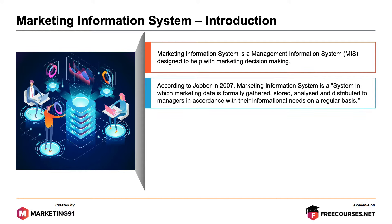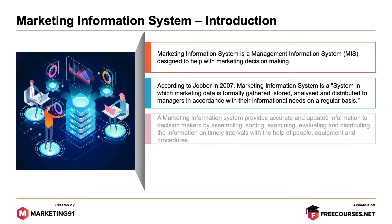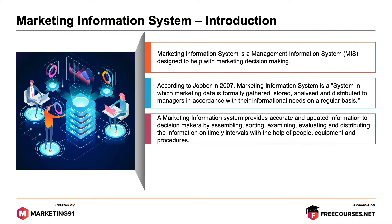According to Jobber in 2007, marketing information system is a system in which marketing data is formally gathered, stored, analyzed and distributed to managers in accordance with their informational needs on a regular basis. A marketing information system provides accurate and updated information to decision makers by assembling, sorting, examining, evaluating and distributing the information on timely intervals with the help of people, equipment and procedures.